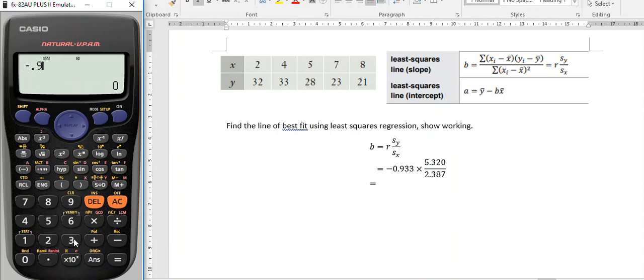Negative 0.933 times 5.32 divided by 2.387. And it's the same number we had there a moment ago. So the gradient of this regression line is negative 2.079.